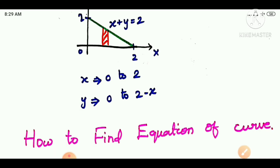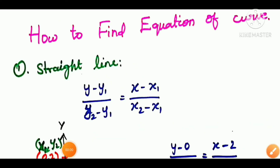The strip can be considered as constant where the variable depends on the distance. Sometimes we have a different graph, so let's take a look at the graph and see how the equation is defined.